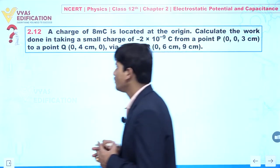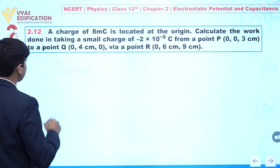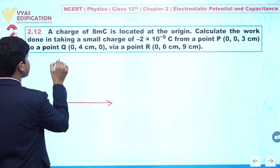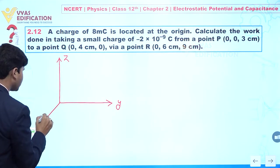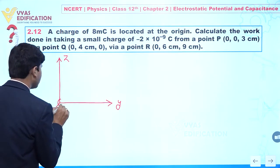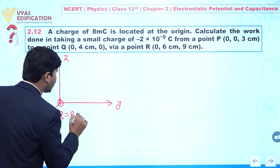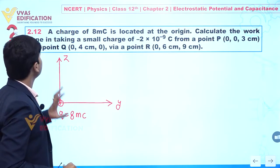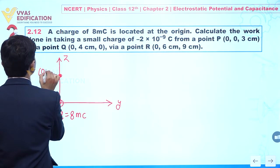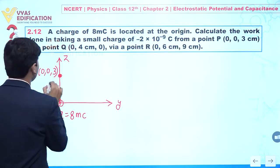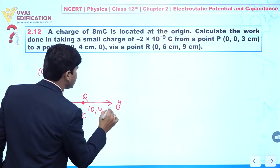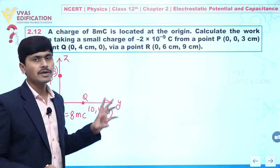Now concentrate on the screen. Let's suppose this is the z-axis, this is the y-axis, and this is the x-axis. A charge is located at the origin. Point P is given as (0, 0, 3) and point Q is given as (0, 4, 0), and we are going from P to Q via a point R.